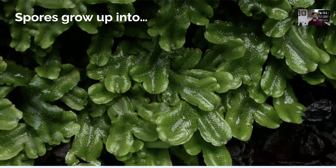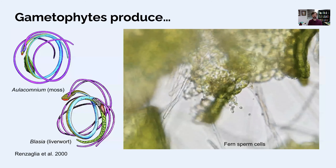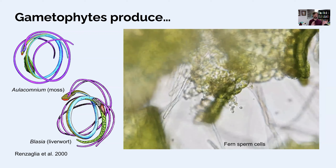Here's another example of a gametophyte — a liverwort gametophyte, taking its name because somebody decided it looked like the liver: flat, slimy, and shiny. Liverworts are also non-vascular land plants. Those gametophytes grow up and produce gametes. If you can't remember whether gametophytes are diploid or haploid, remember that gametophytes make gametes, while sporophytes make spores as the next stage in the life cycle.